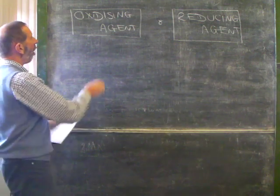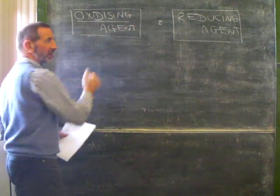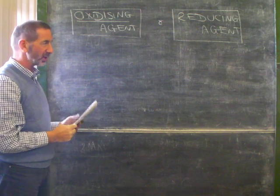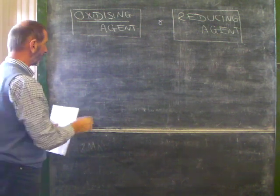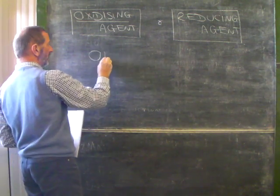Let's take oxidising agent. Something to do with oxidation obviously. Now what's oxidation? We should know by now what oxidation is. Oxidation is loss of electrons.